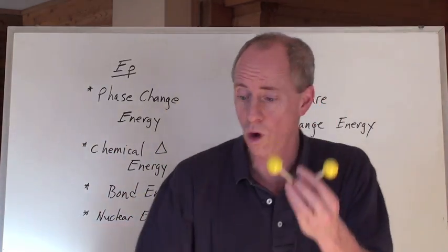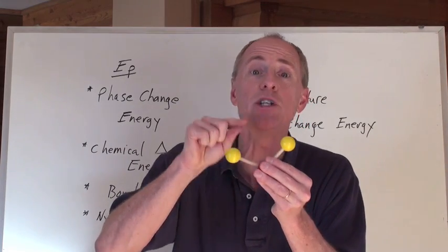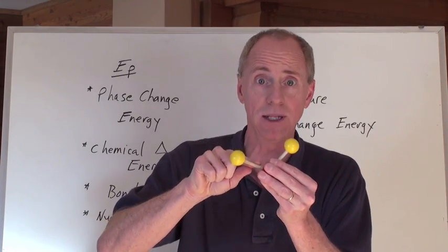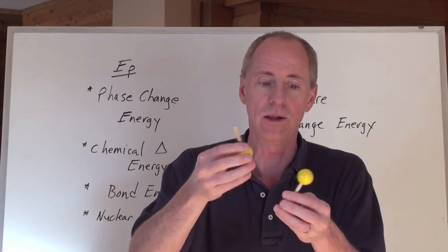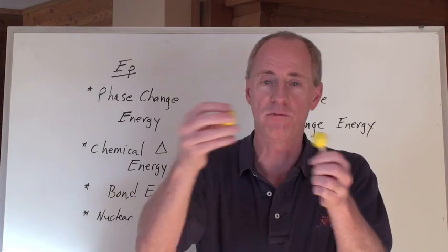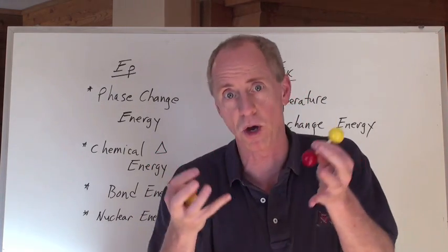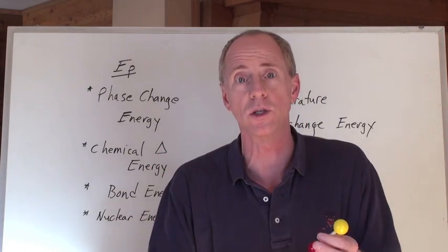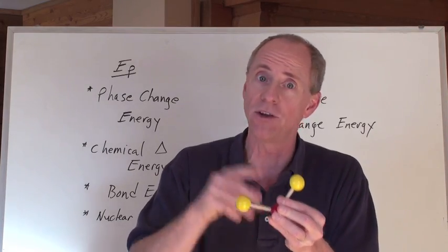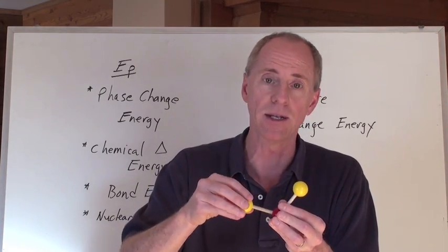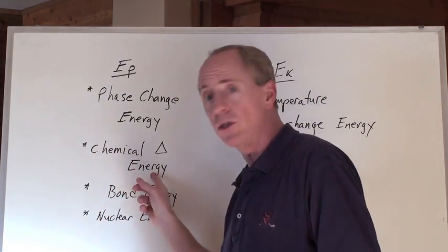Now, if we took this water molecule and added energy to break the intramolecular bond — snap — the hydrogens go off by themselves to form H₂, and the oxygens bond up to form O₂. That's disturbing that covalent intramolecular bond, and that's going to be a chemical change.